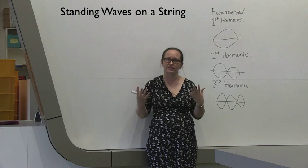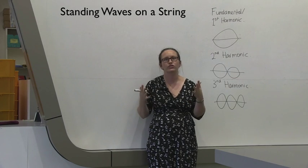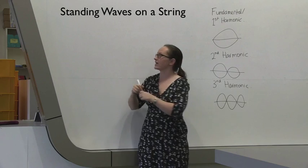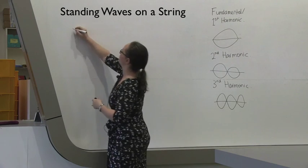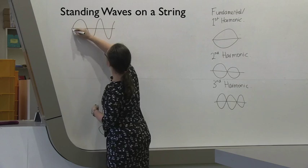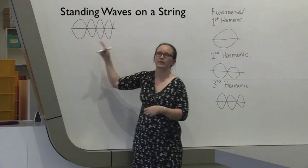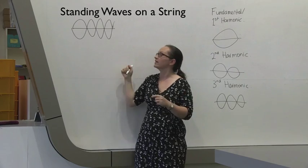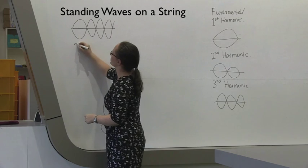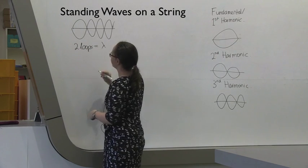In order to do this, there's some theory that you're going to need to understand. You're going to need to know a bit about standing waves. When you have a standing wave on a piece of string, it's going to appear something like this. In this case, one wavelength is equal to two loops. So two loops is equal to one wavelength.